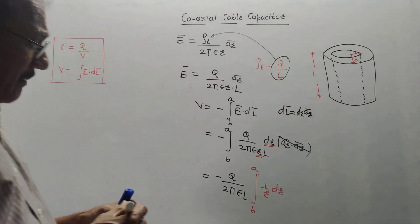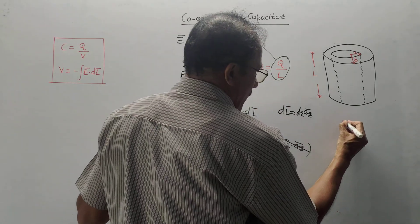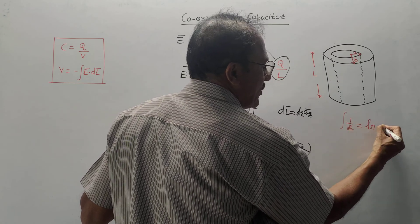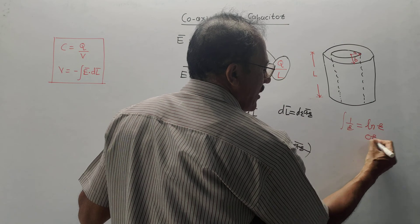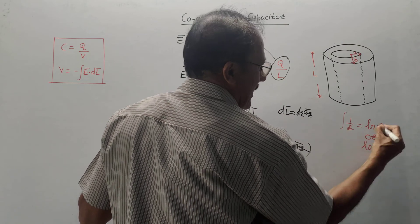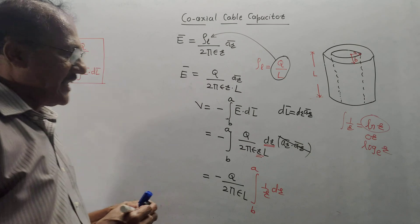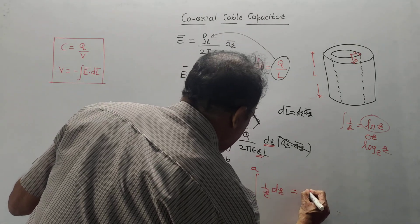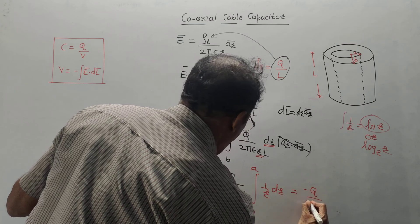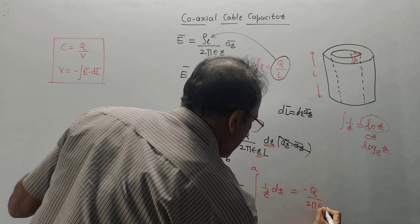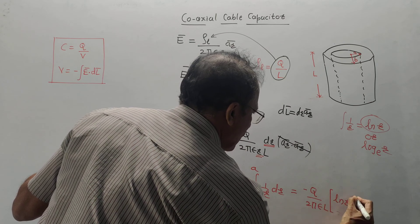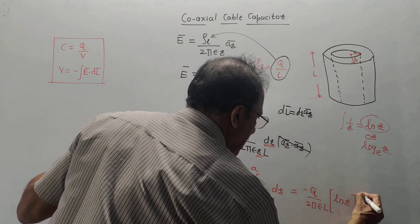Now, integration of 1 by R. Integration of 1 by R is natural log of R. It is denoted by L N R or another notation is log to the base E R. We will use this notation that is natural log of R. So, this equation can be written as minus Q upon 2 pi epsilon L, L N R limits are B to A.